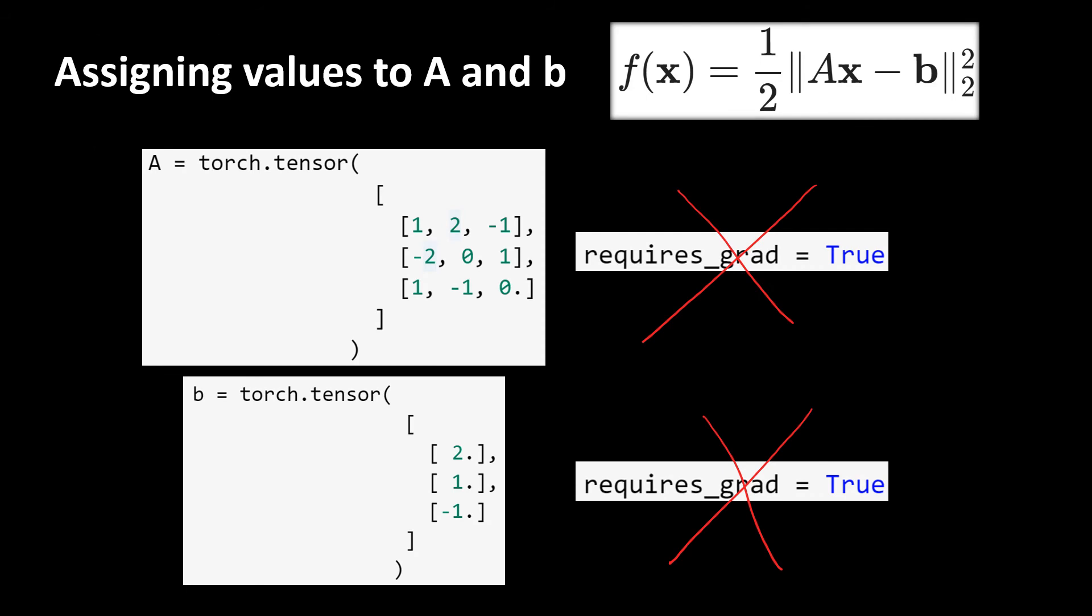Notice when we define tensors of A and b we should not set the requires_grad to be true because they are constant matrices.